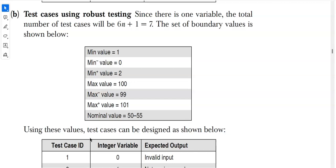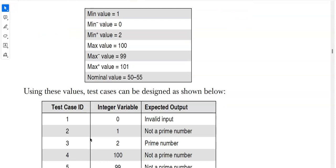For Robust Testing, the formula is 6n + 1. With one variable (n = 1), total test cases = 6×1 + 1 = 7. The boundary values are: minimum value 1, minimum-minus value 0, minimum-plus value 2, maximum value 100, maximum-minus value 99, maximum-plus value 101, and nominal value 50 to 55. So we have 7 boundary values: 0, 1, 2, 99, 100, 101, and 53.